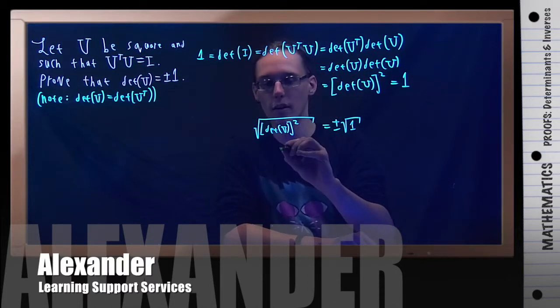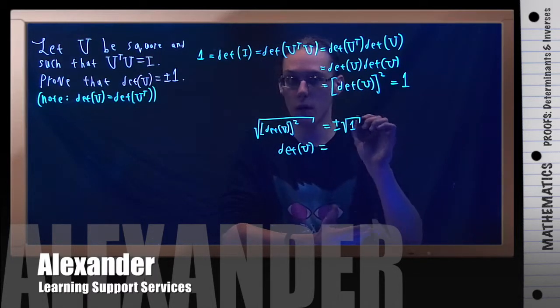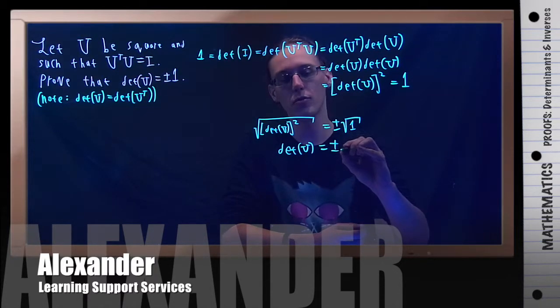The square root of a square cancels off. I just get determinant of U. The square root of 1 is just 1, but now we have the plus or the minus.